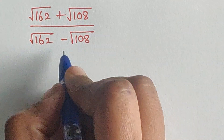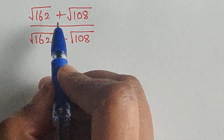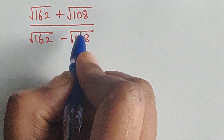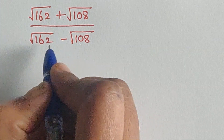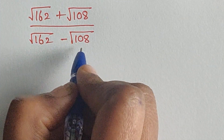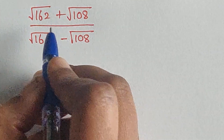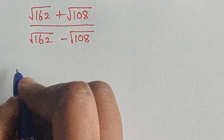Hello everyone, welcome back to our channel. Here we have one problem: square root of 162 plus square root of 108, divided by square root of 162 minus square root of 108. How do we solve this problem?